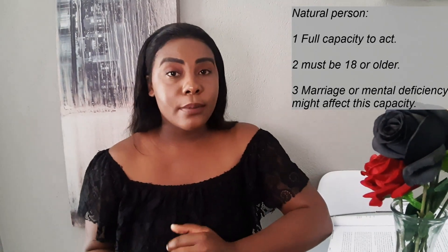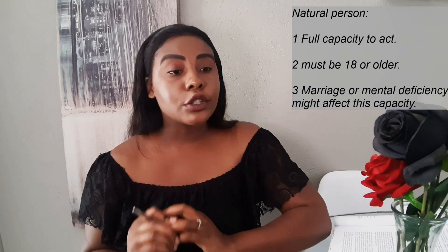In South Africa, we have a number of different marriage regimes. We have the civil marriage, the civil union and partnership, customary marriages, religious marriages, and foreign marriages. Now we have three types of civil marriages: in-community of property, out-of-community of property, and out-of-community of property with the accrual.